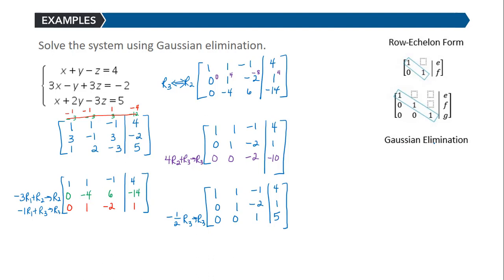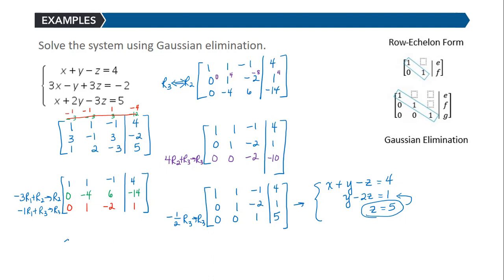Now I have it in Gaussian elimination row-reduced form. Converting back to the system: x plus y minus z equals 4; y minus 2z equals 1; and z equals 5. The benefit is I now know the value of z. Back substituting: y minus 2 times 5 equals 1, so y minus 10 equals 1, giving y equals 11.